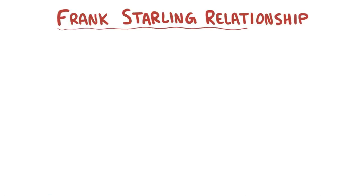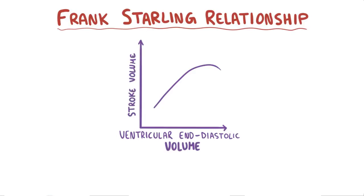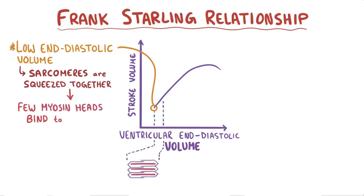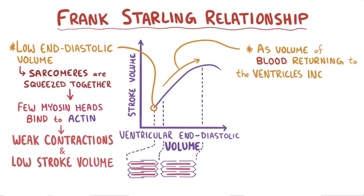Now that we've seen the relationship between length of the sarcomeres and tension during contraction in systole, let's look at the Frank-Starling relationship. This can also be plotted onto a similar graph, with the ventricular end-diastolic volume on the x-axis and the stroke volume — the volume of blood pumped out by the ventricle with each heartbeat — on the y-axis. At the start of the curve near the bottom left-hand corner, we have a low end-diastolic volume, meaning very little blood in the ventricle at the end of diastole. So sarcomeres are squeezed together with very few myosin heads binding to actin, resulting in a weak contraction during systole and a low stroke volume.